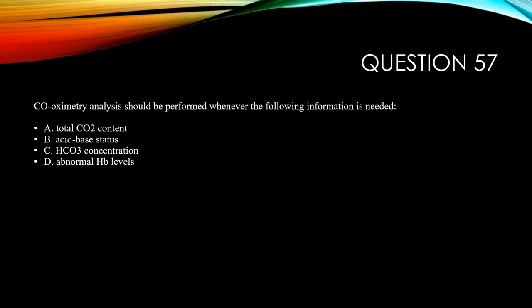Question 57. Building on the theme of co-oximetry — co-oximetry analysis should be performed whenever the following information is needed. A, total CO2 content. B, acid-base balance status. C, bicarb or HCO3 concentration. D, abnormal hemoglobin levels.